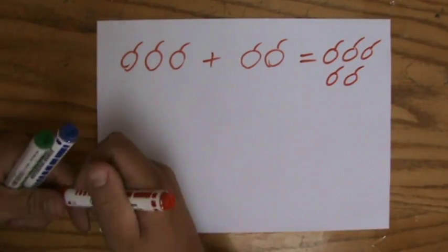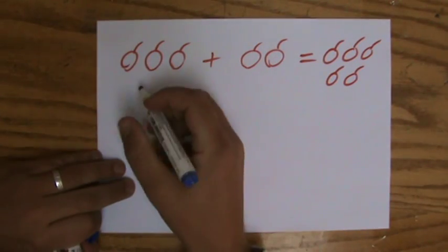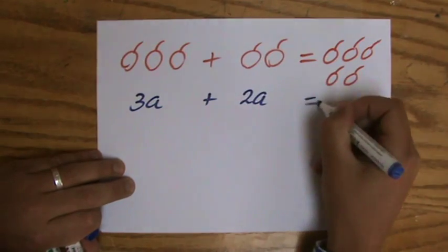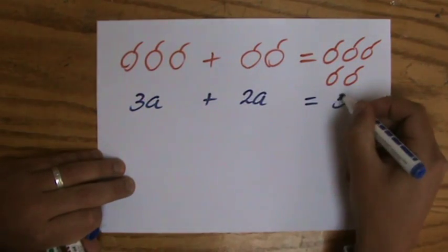Now, if I would rewrite this in algebra, I could say, 3A plus 2A equals 5A.